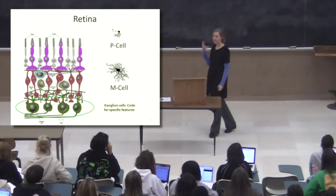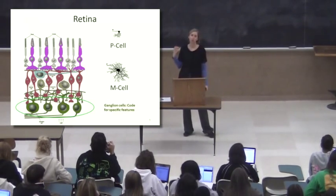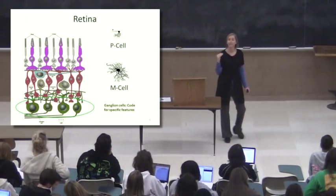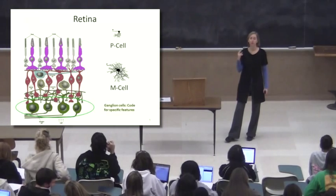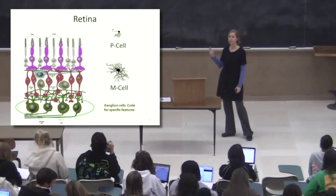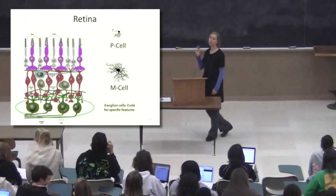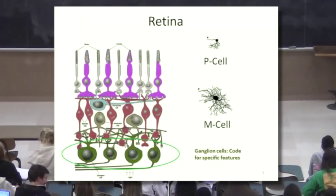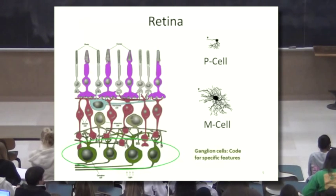We have a specialized system for seeing motion. The system starts in the eye. The last layer of cells in the eye are known as ganglion cells. And there's two types, P cells and M cells. The M cells are the cells that allow us to see motion. Then this separate stream of information related to motion persists throughout the brain. So we have these specialized systems and specialized areas in the brain just for seeing motion.